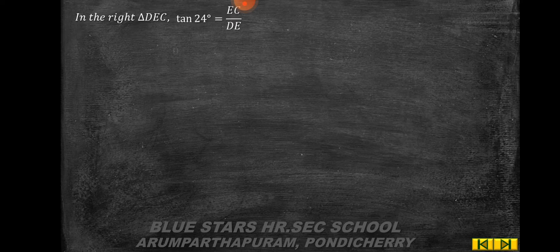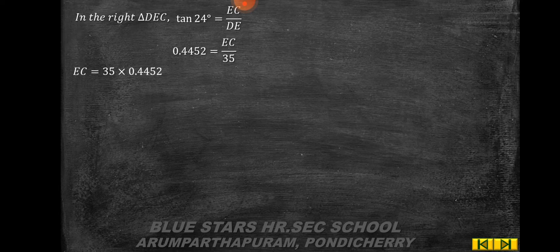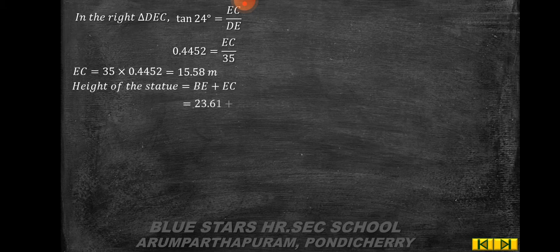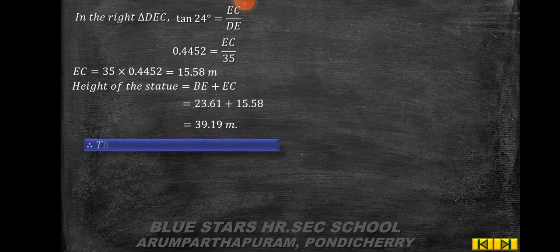In right triangle DEC: tan 24° = EC/DE, so 0.4452 = EC/35, giving EC = 15.58 meters. Height of the statue = BE + EC = 23.61 + 15.58 = 39.19 meters.